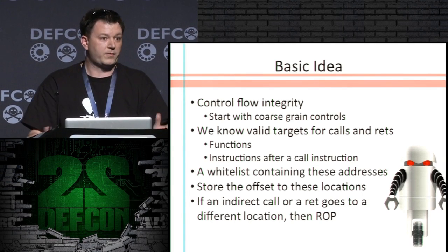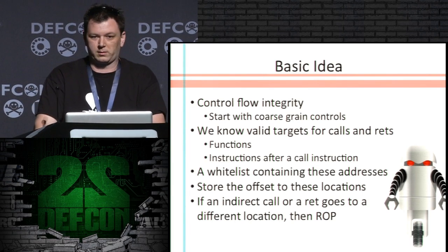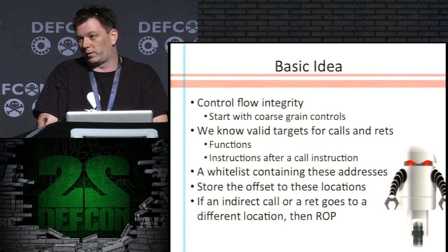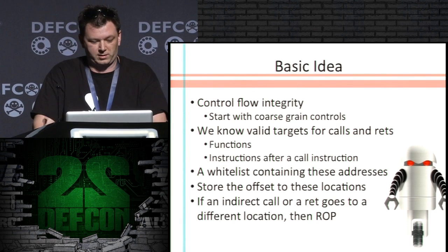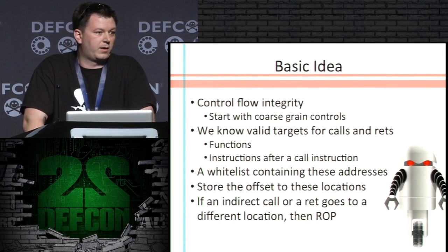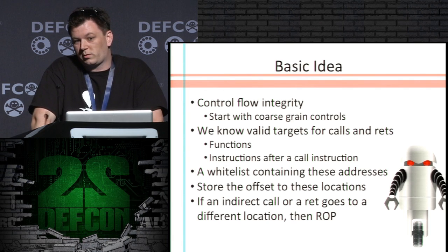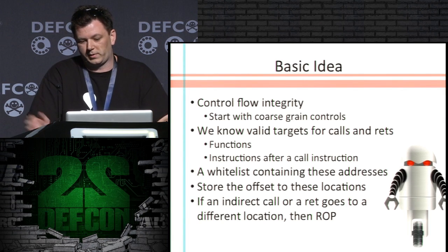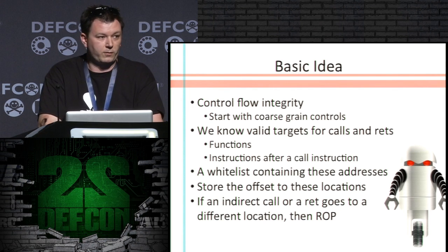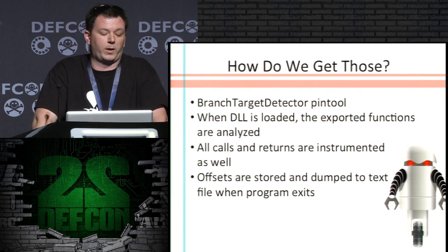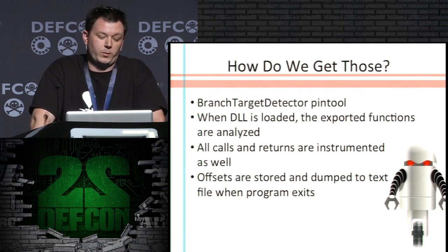We want to store the offset to these addresses because DLLs are loaded with ASLR. And then if an indirect call or return doesn't go to one of these addresses, we flag it as a ROP. So first we have to get those offsets and build our whitelist.